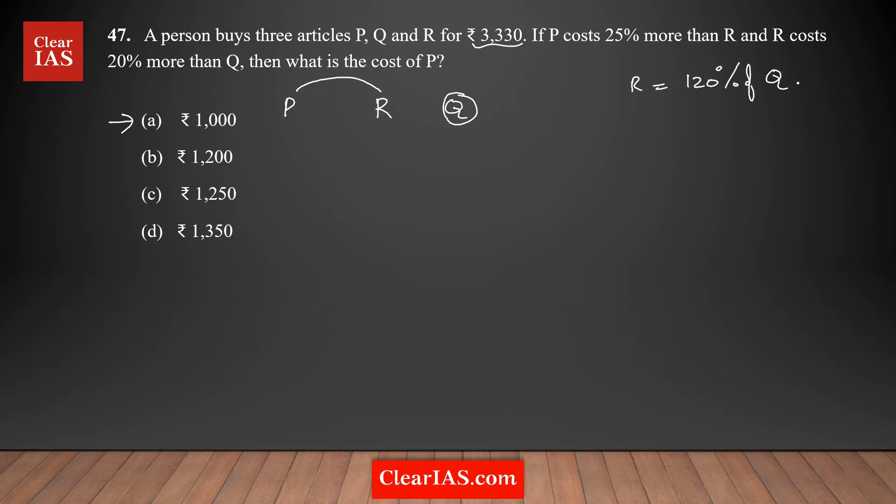120% is nothing but 6/5, so it's better to write in terms of a fraction. R equals 6/5 times Q, or you can write as 120% of Q—either way it doesn't matter.